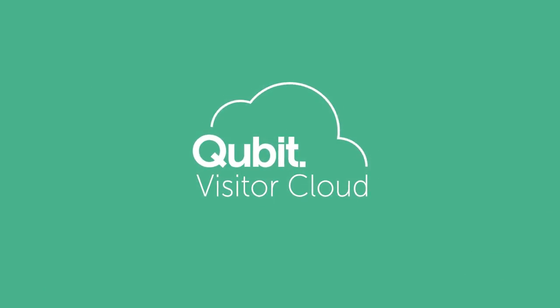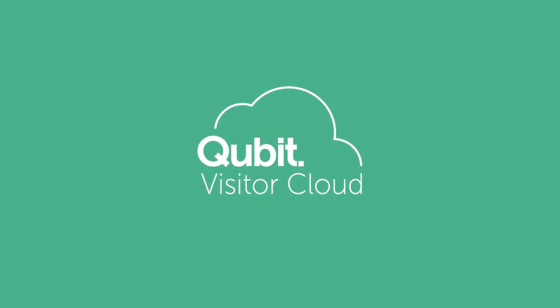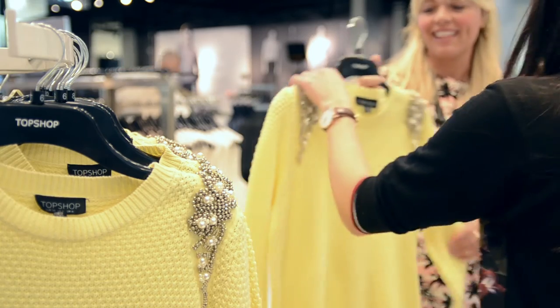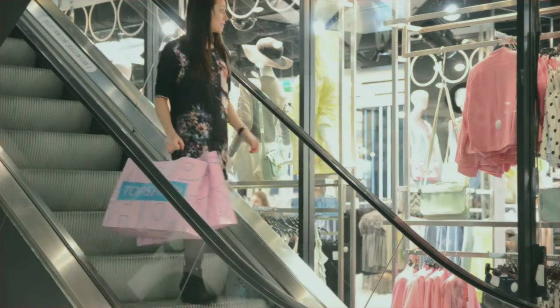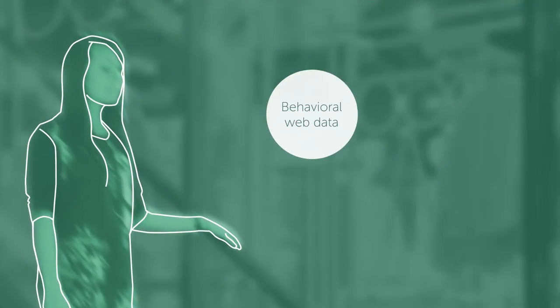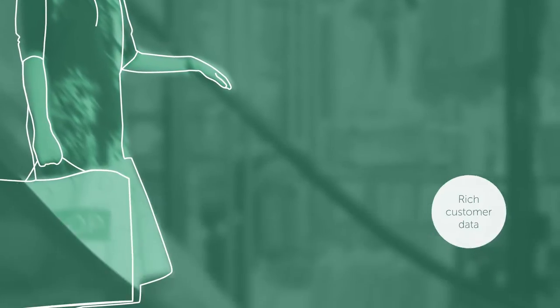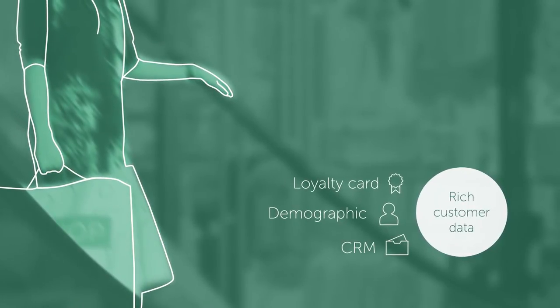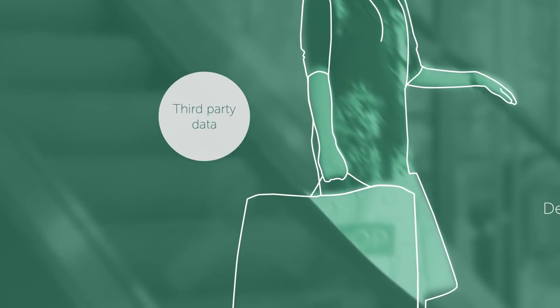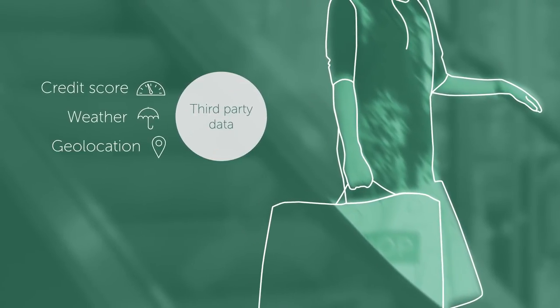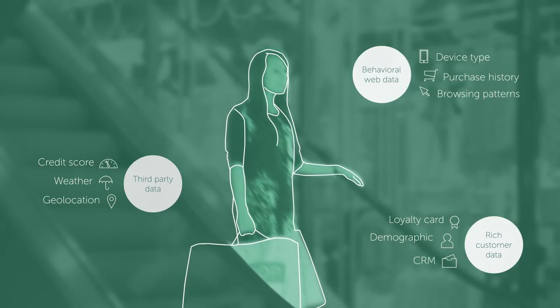Connecting a business through a single data infrastructure — this is where the Visitor Cloud comes in. Bringing your data to life in such a way that you don't need to heavily invest in your own complex infrastructure. The first role of Visitor Cloud is to build a detailed profile of every customer. We do this by combining data from lots of different sources — behavioural data from your website with other rich data sets such as loyalty programs, demographic and CRM, and then additional third-party data sets such as credit score or weather.